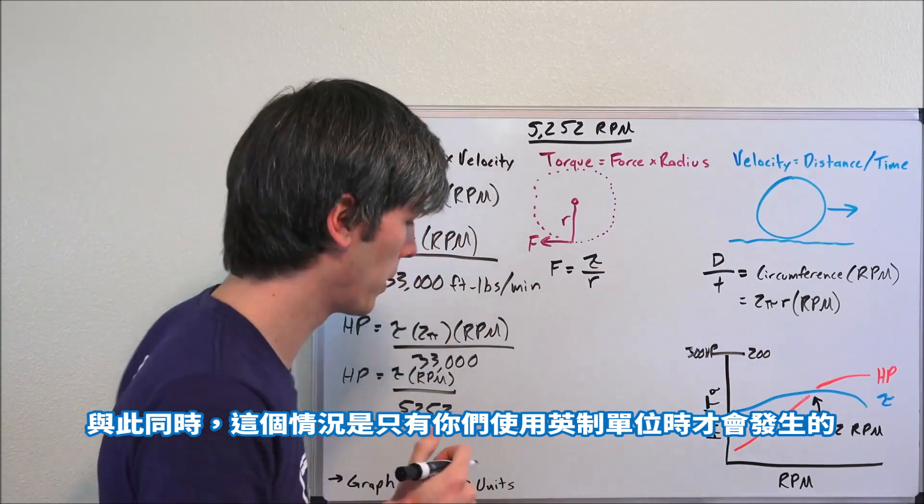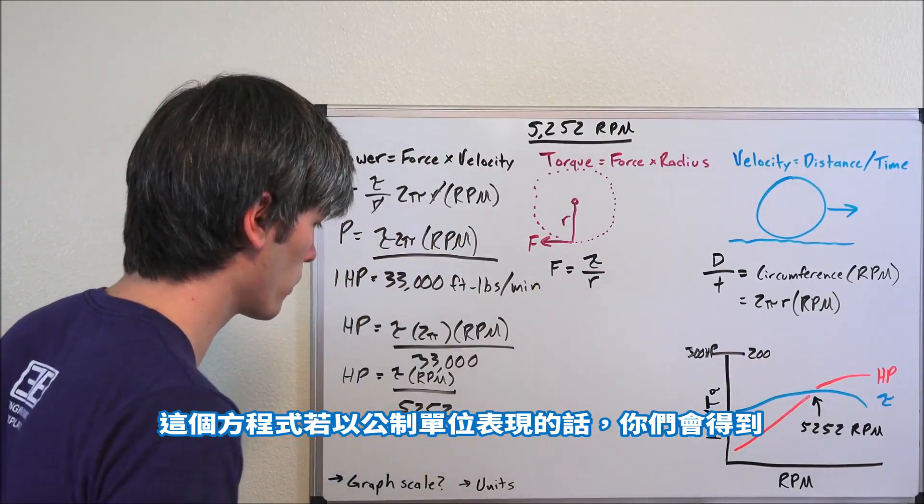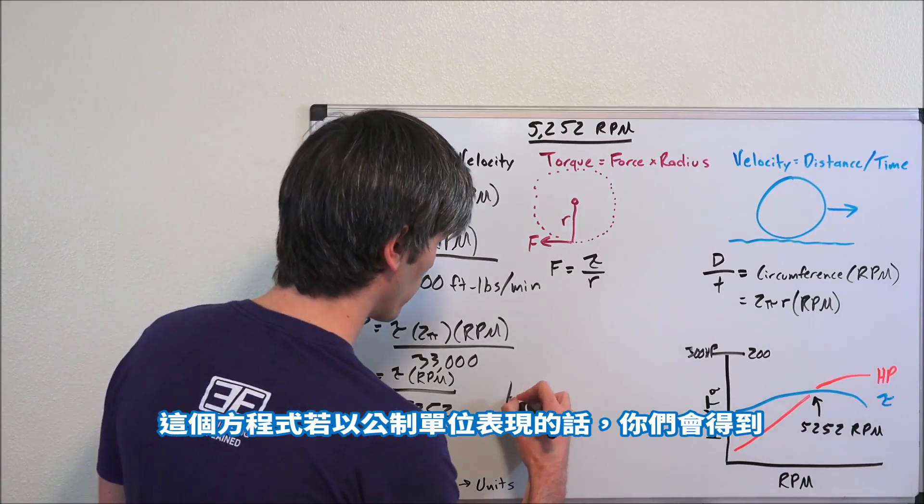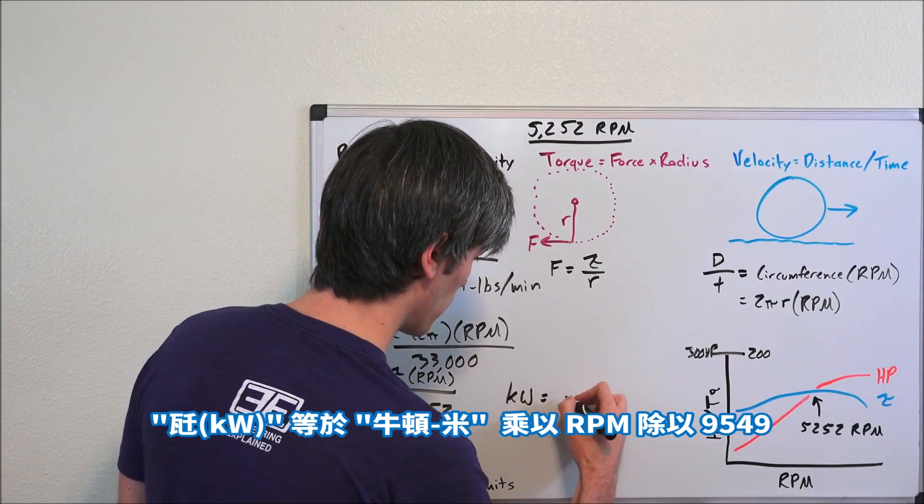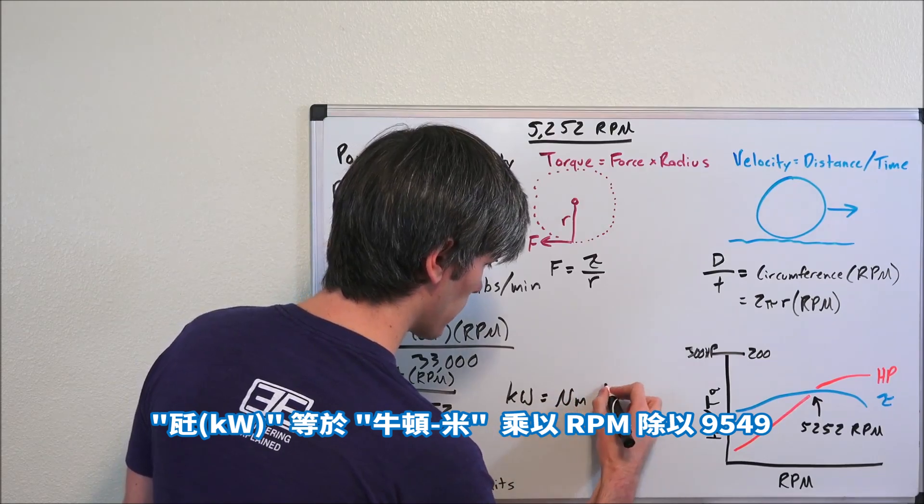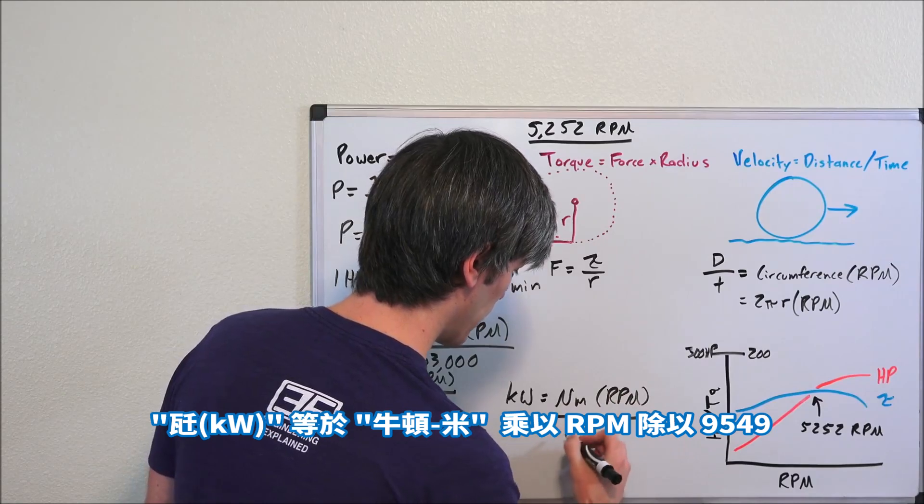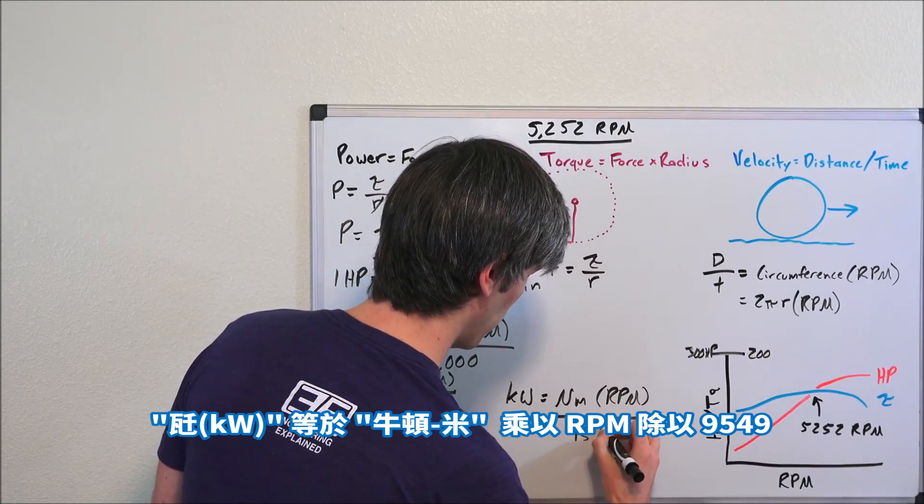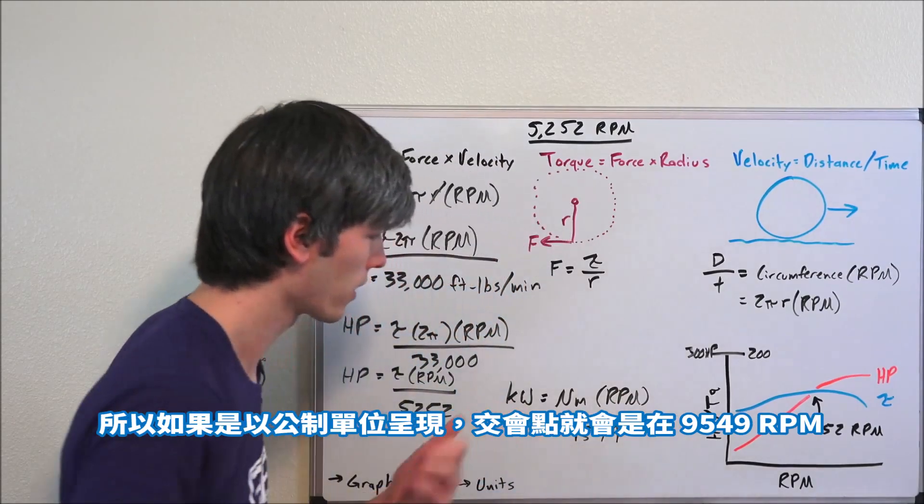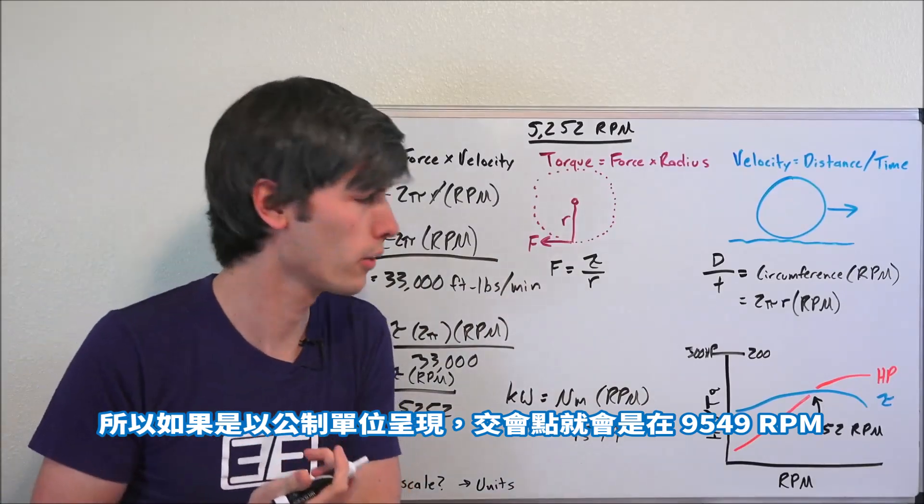This equation with metric units is going to give you kilowatts equals newton meters times RPM divided by 9,549. So in metric, they're going to cross at 9,549 RPM.